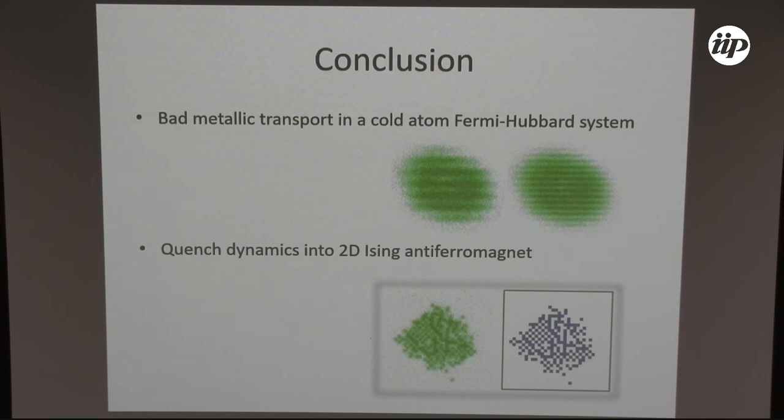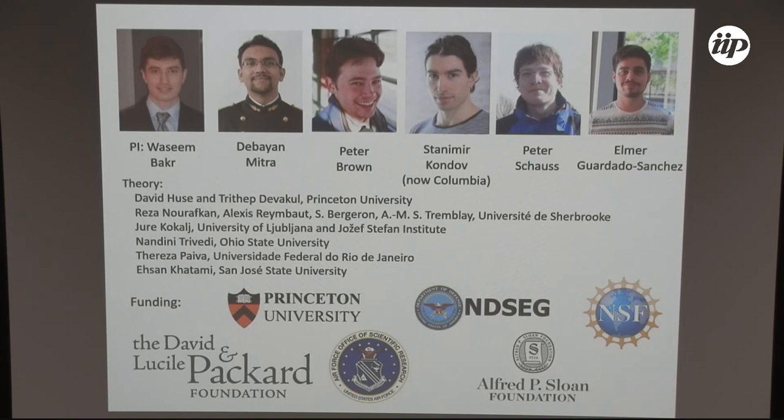With that, I want to conclude. I showed you in the first part the bad metallic transport in the Fermi-Hubbard system, where we used this imprinting of stripes, and then the Rydberg-based transverse Ising model in the same experiment. With that, I want to thank the group. All the work has been done in the experiment of Wasim Bakr. Here we have the people: Peter Brown and Debayan Mitra. Emma did the work on the Rydberg system. We have a variety of theory collaborations that worked on DMFT, finite temperature Lanczos, and DQMC.